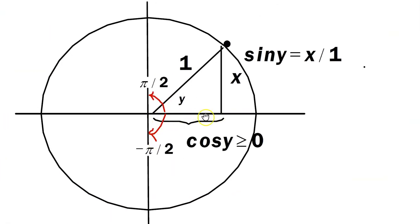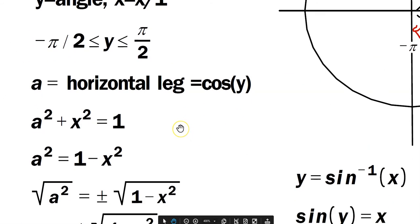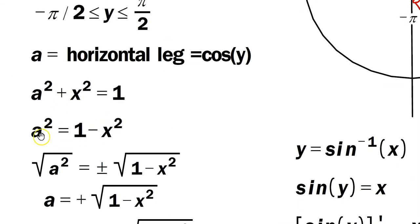Cosine y, I'm talking about this part where the brace is. So that means the following then, using the Pythagorean theorem, because it is just a triangle. You would have a squared plus x squared equals 1. That gives you then a squared equals 1 minus x squared.